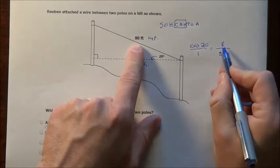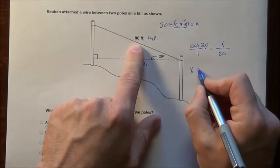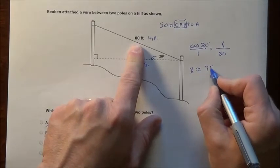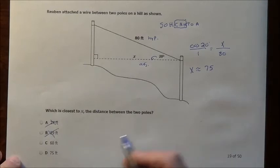Now I simply cross multiply. X times 1 is x, will be approximately 80 times the cosine of 20. When I do that, guess what I get, 75, which is choice D.